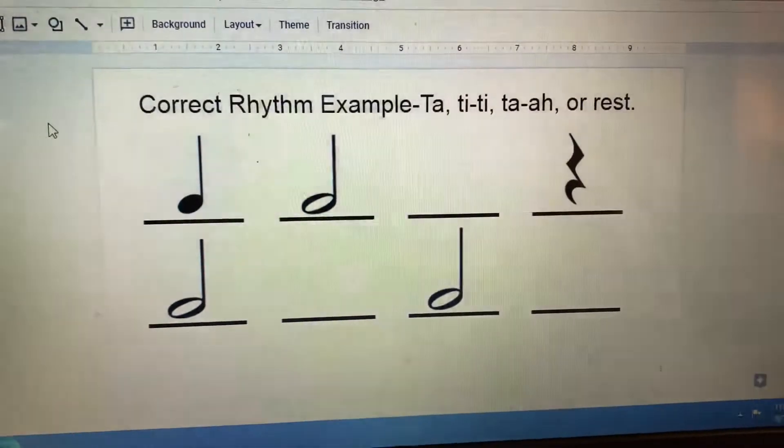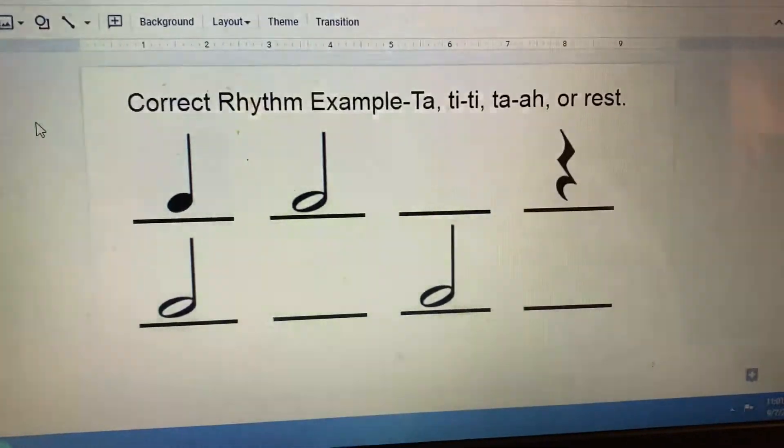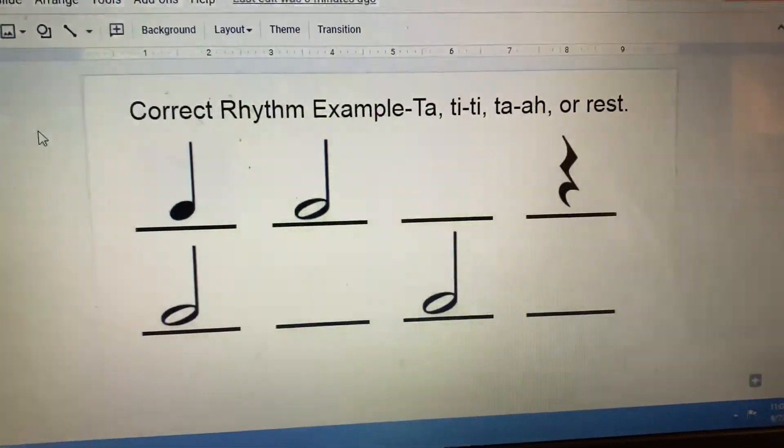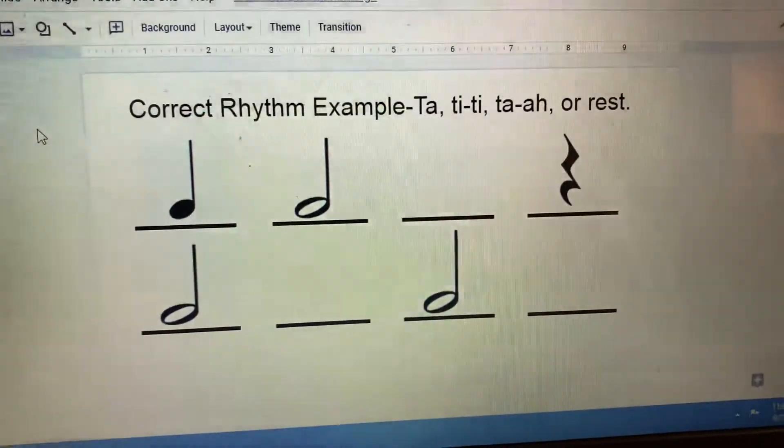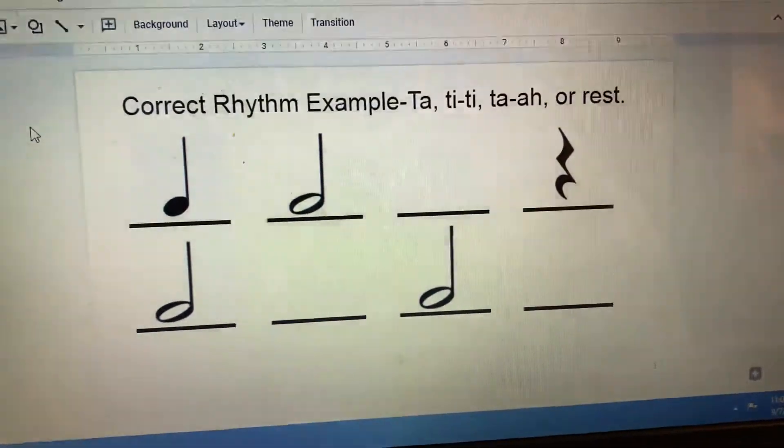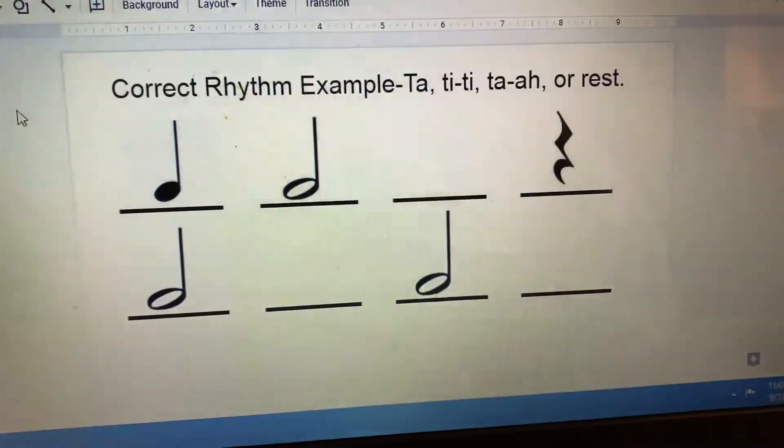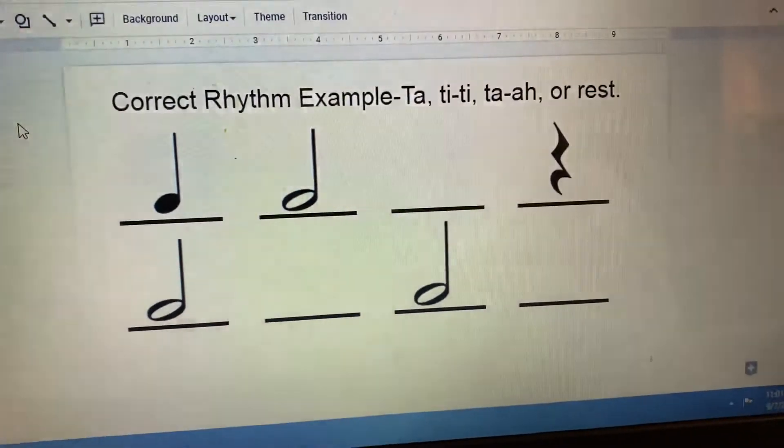Then you will see examples of correct rhythm examples of ta, ti-ti, ta-ah, or rest. You notice the first line is ta, ta, ah, rest. It's correct that there are two lines for that half note or ta-ah, because it takes two beats.